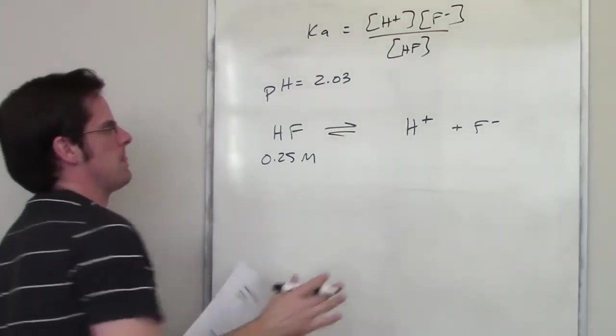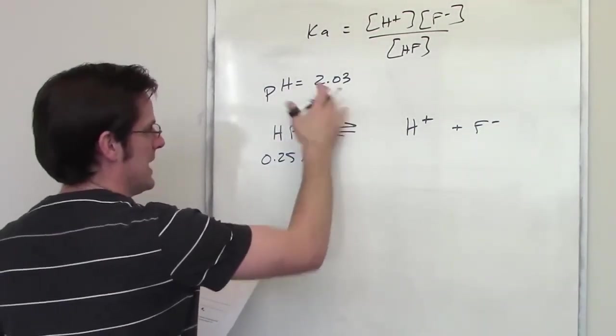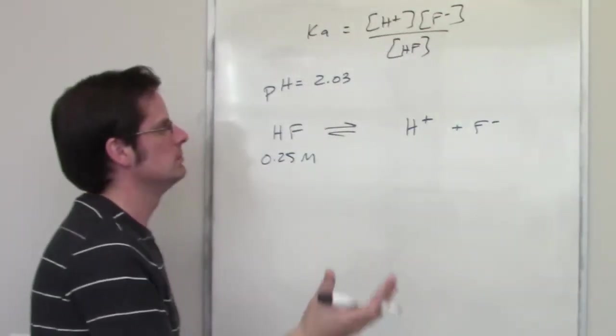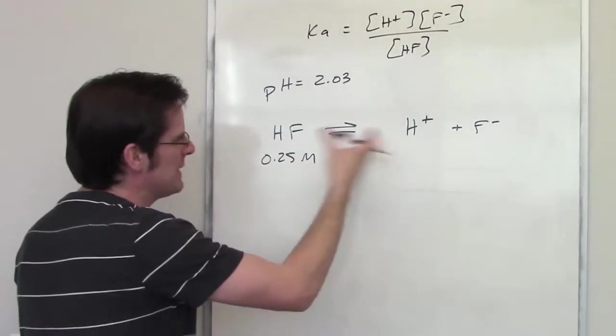So, the pH is going to be 2.03 or is 2.03 at equilibrium according to this problem. Can I use that to determine anything?